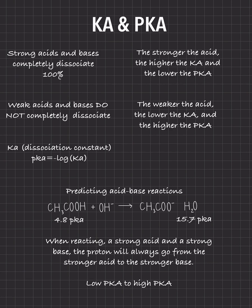I already gave you a cheat: the proton goes from the low pKa to the high pKa. Notice that this strong acid has a low pKa, and the conjugate acid on the other side is a weaker acid with a higher pKa. So it's going from the lower pKa to the higher pKa — and this applies to strong acid-base reactions.